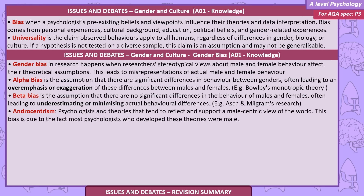Gender bias in research happens when researchers' stereotypical views about male and female behaviour affect their theoretical assumptions, leading to misrepresentations of actual male and female behaviour. Alpha bias is the assumption that there are significant differences in behaviour between genders, often leading to an overemphasis or exaggeration of these differences.